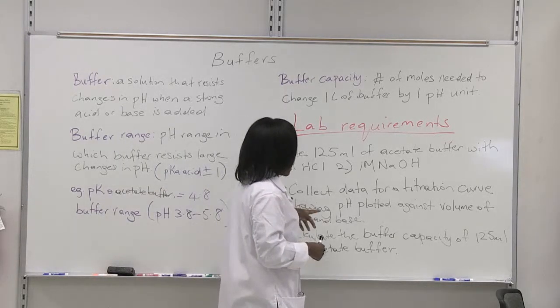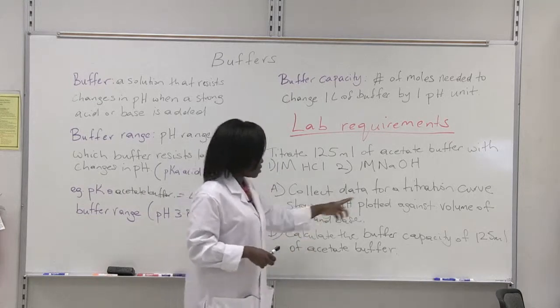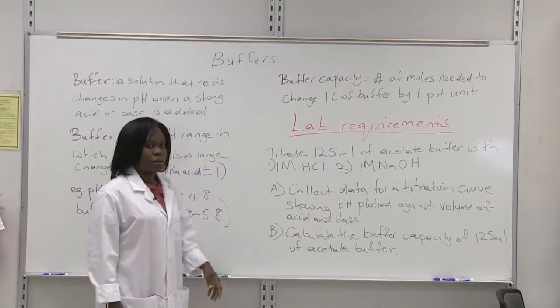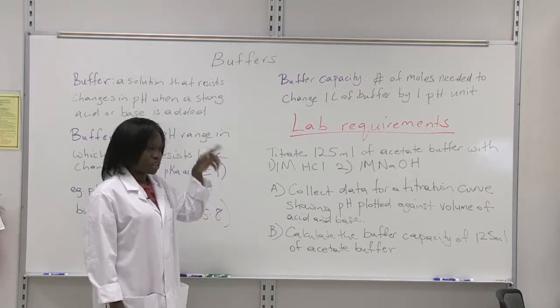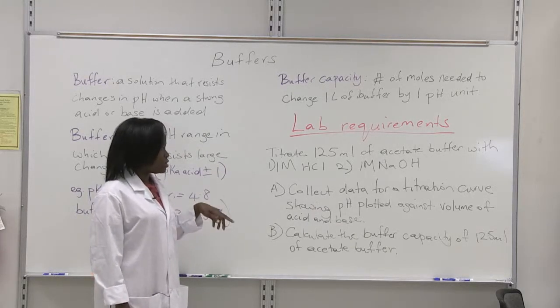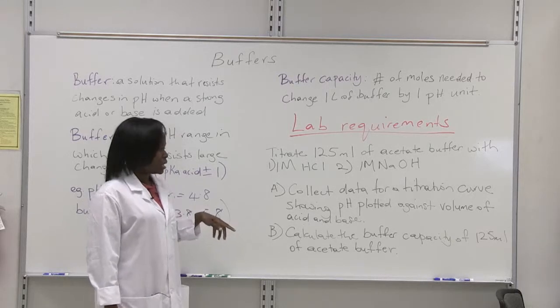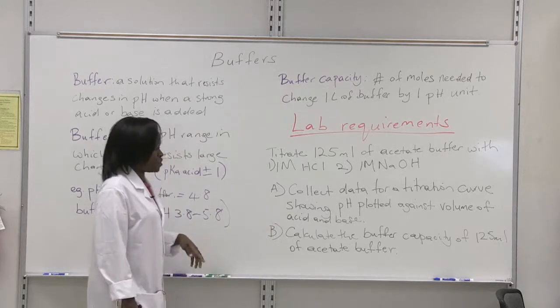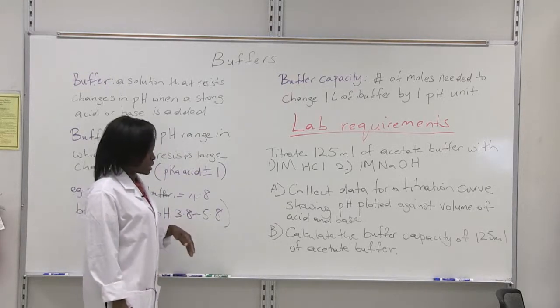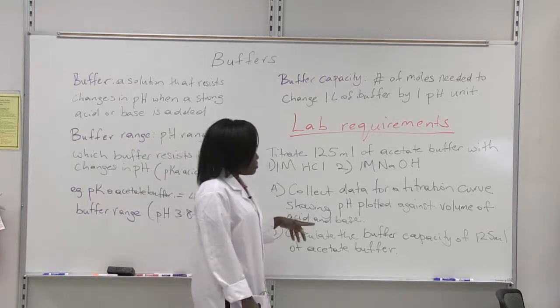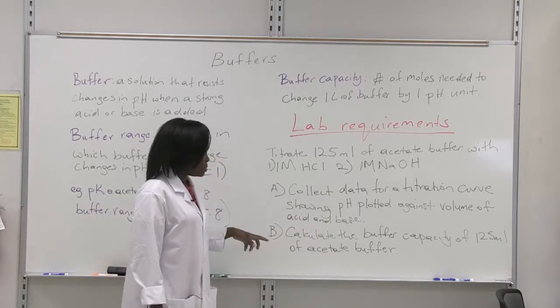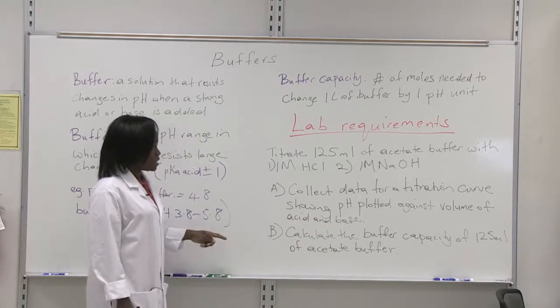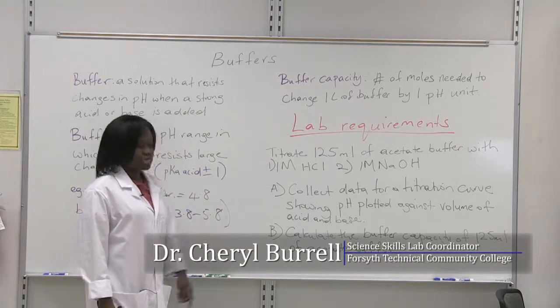Based on that, you'll be able to plot a titration curve which will show the pH plotted against your volume. Your pH will be on your y-axis. The volume of base or acid added would be on your x-axis. Based on the data that you collect, you're going to be able to calculate the buffer capacity of 125 mL of acetate buffer.